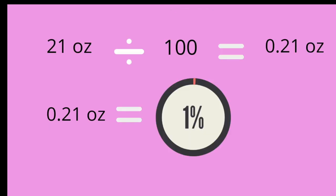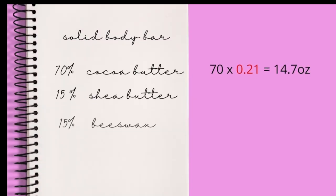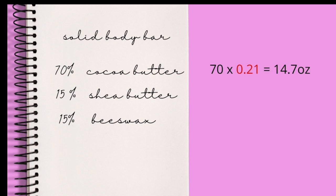0.21 ounces is your 1% in this recipe. Once you establish this 1% — meaning in this case 0.21 ounces — you can multiply it by the percentage of the given ingredient. In this case we take 70 and multiply it by 0.21, resulting in 14.7 ounces for cocoa butter.